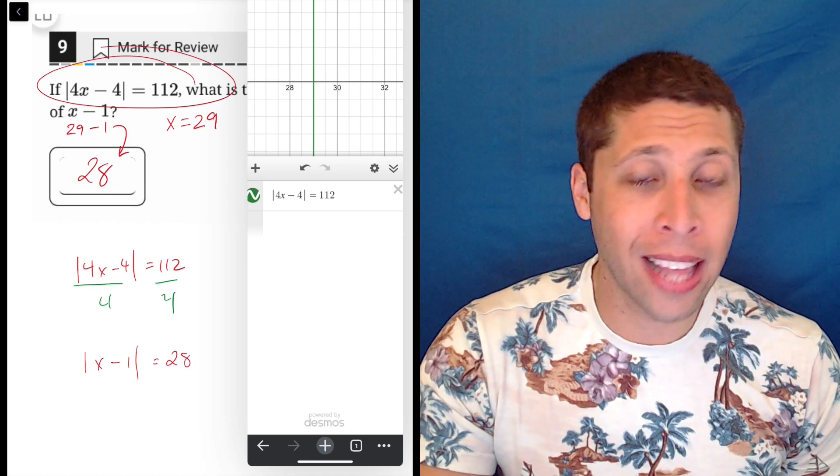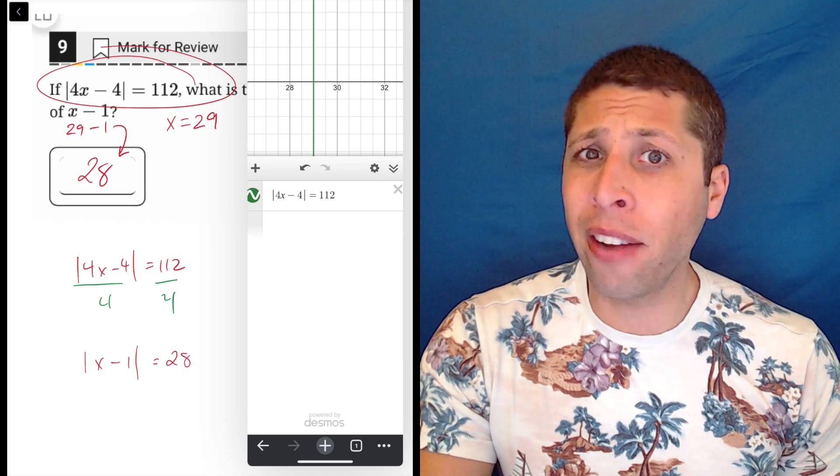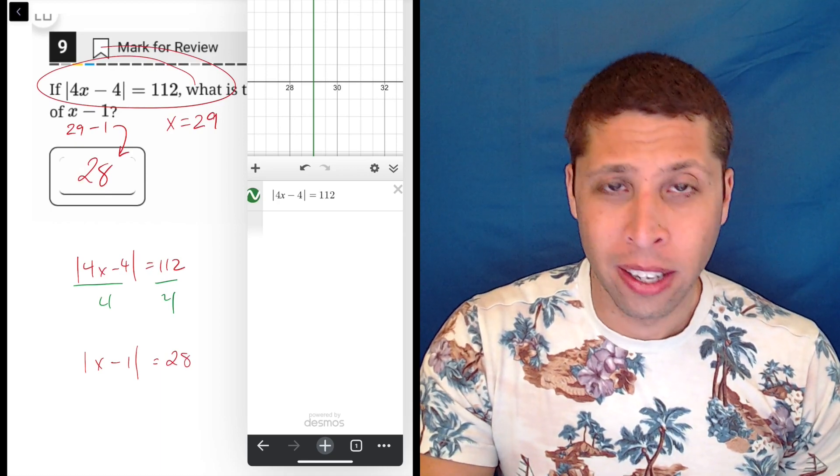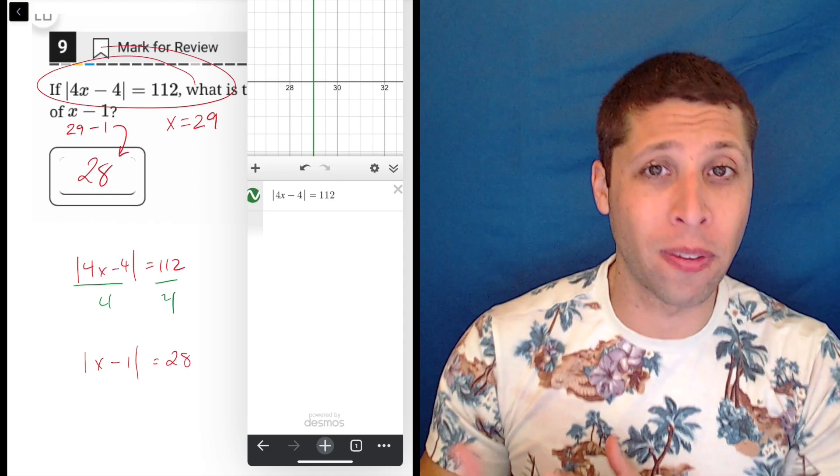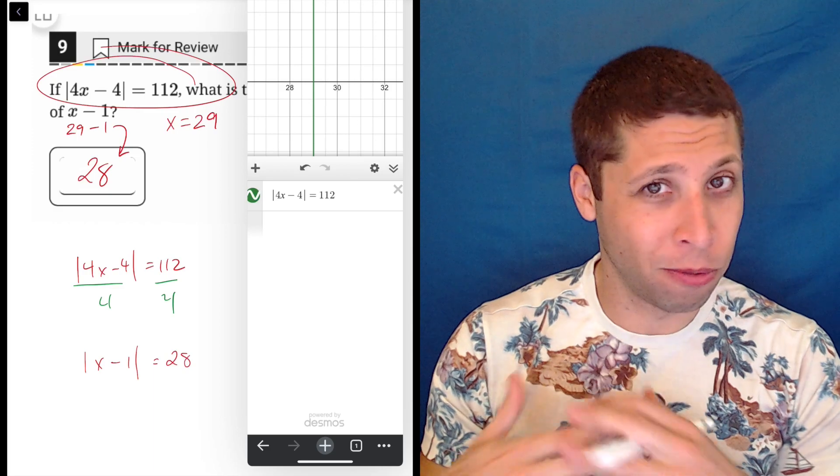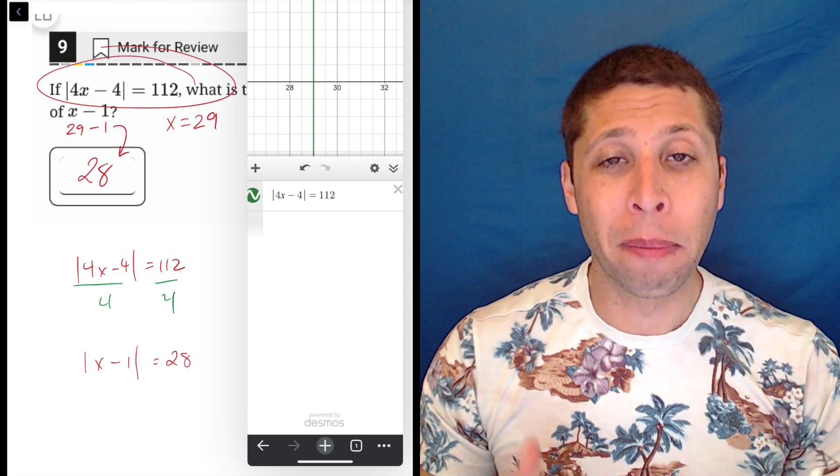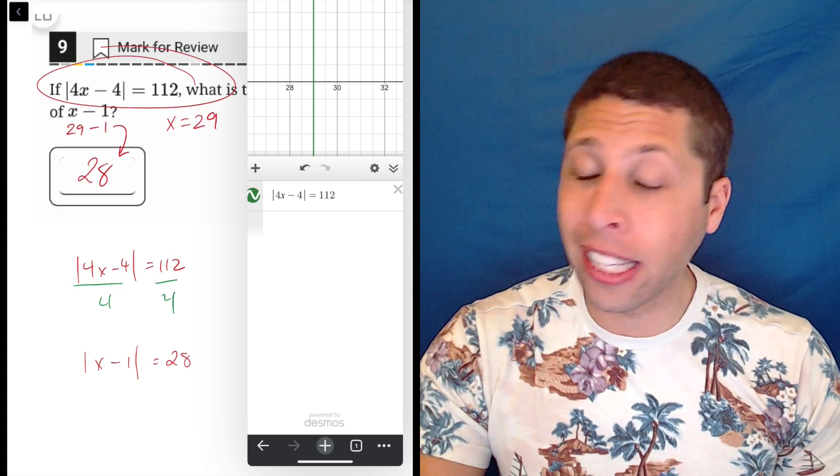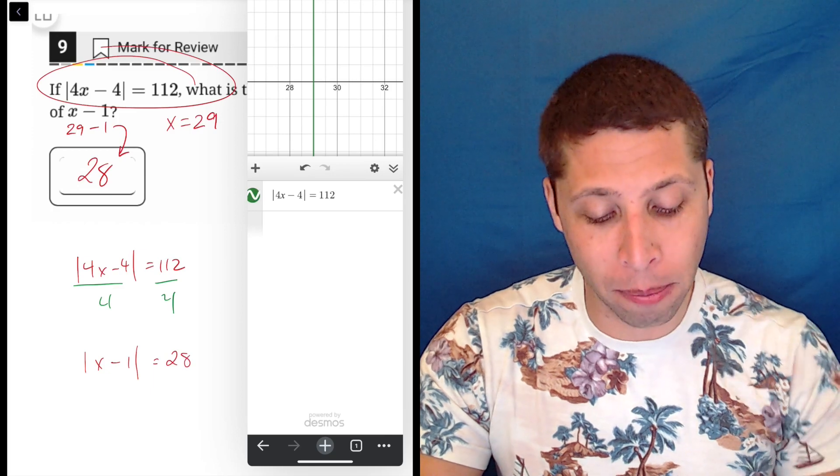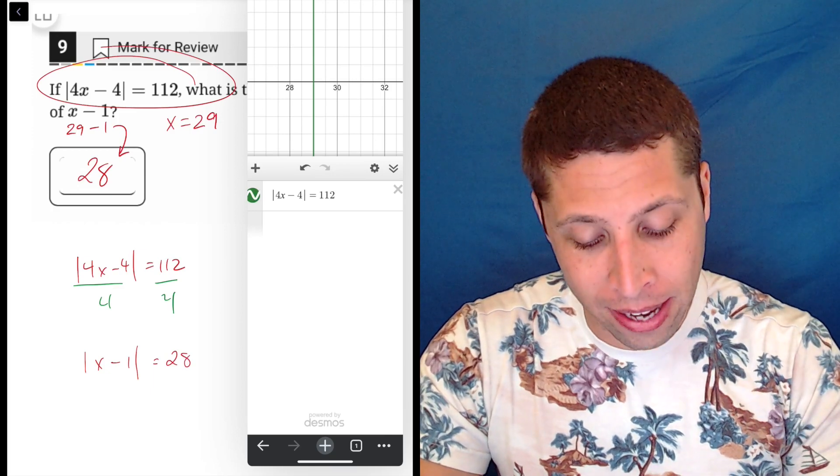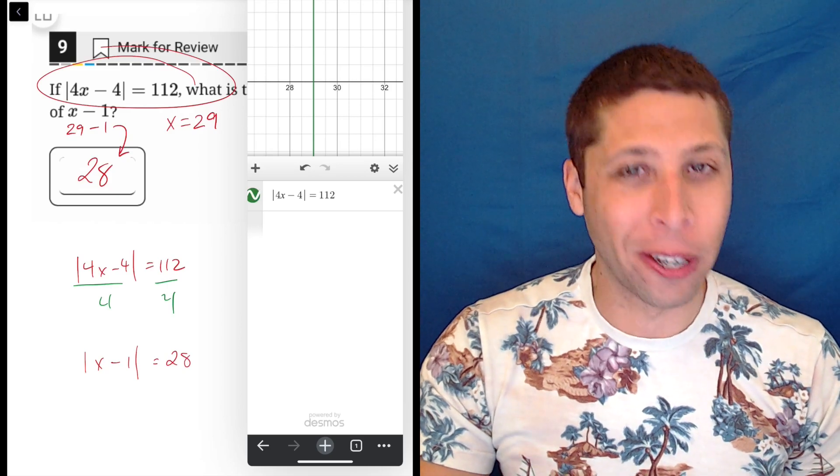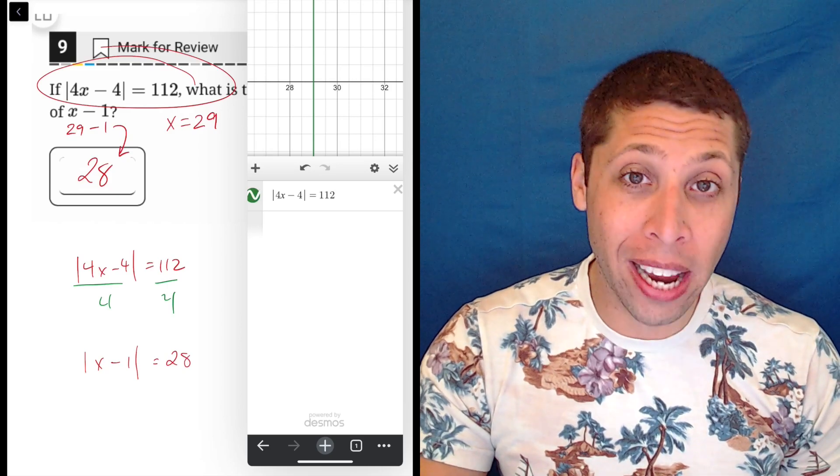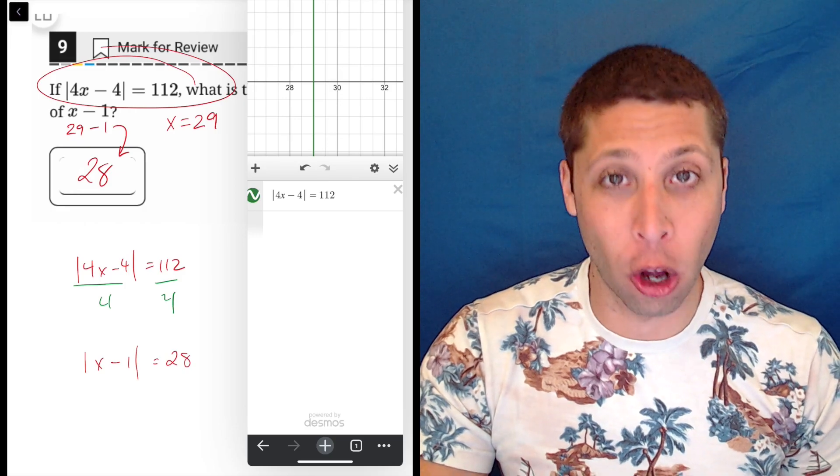So as long as you're on guard about that, the calculator will take care of everything else for you here. You just need to have a little faith in it and understand that when it's giving you those vertical lines, those are the values of x. So do with them what you need to do, but it's basically just solving any equation you put into it. Sometimes it even lets you just tap it and see it, but because of the absolute value here, it's not doing that, but it's fine. We are able to see it very clearly and then get the question right without having to worry about algebra at all.